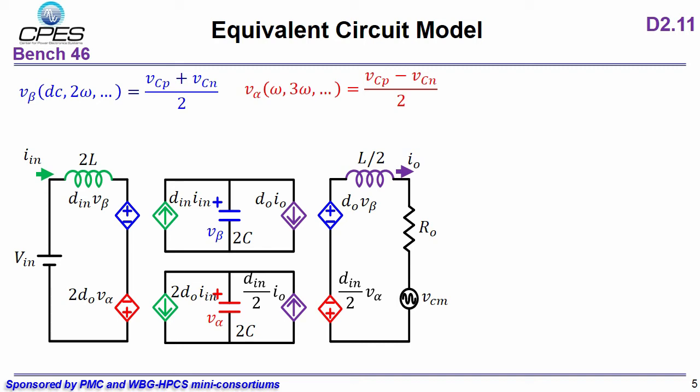Based on the new state equation, we can draw this new equivalent circuit for MMC. When we assume there is a strong DC bias, V-beta is much greater than V-alpha. When we look at these two voltage sources, V-beta is much larger than V-alpha. And on the output side, V-beta is also much larger. From here, we can clearly show the major power flow in MMC is from V-beta loop. And we know that V-beta is related to source and load.